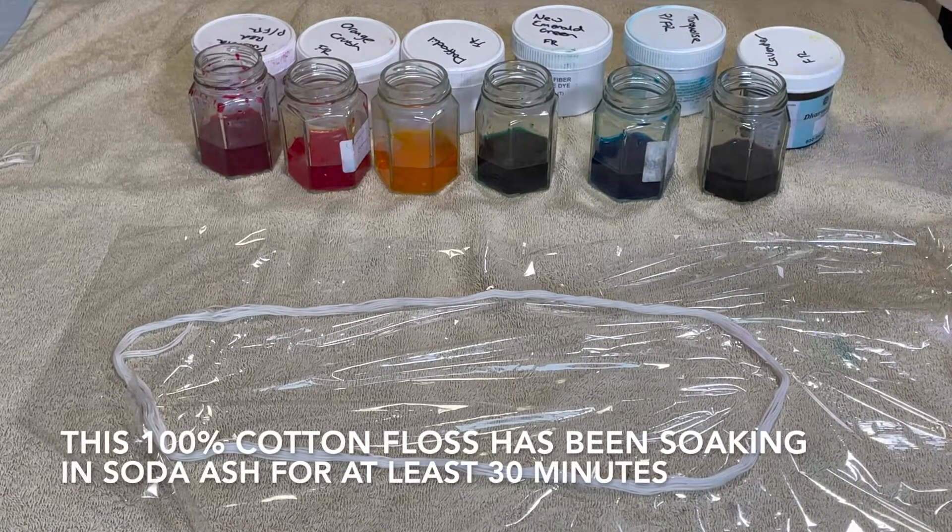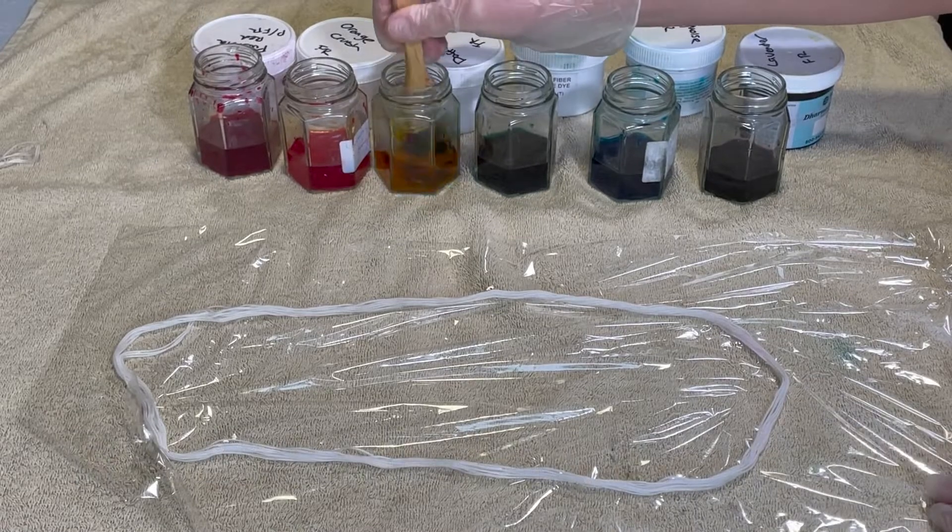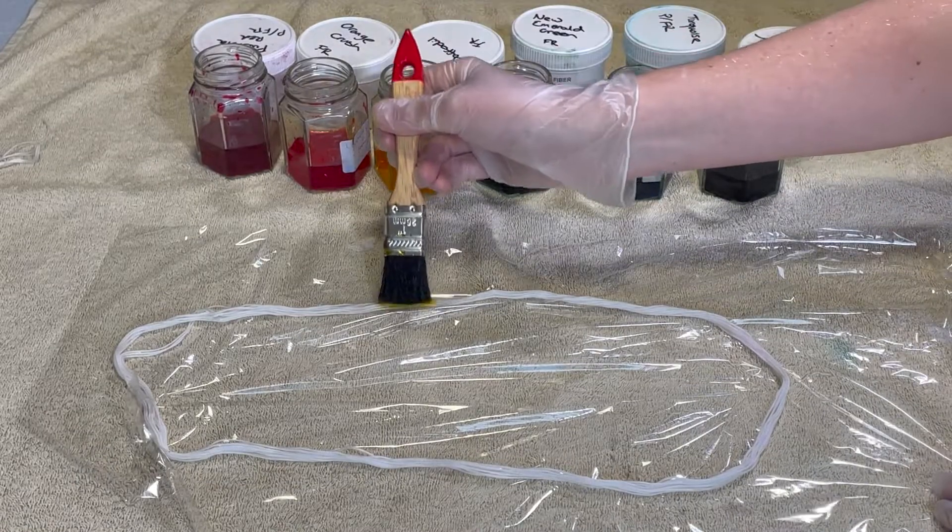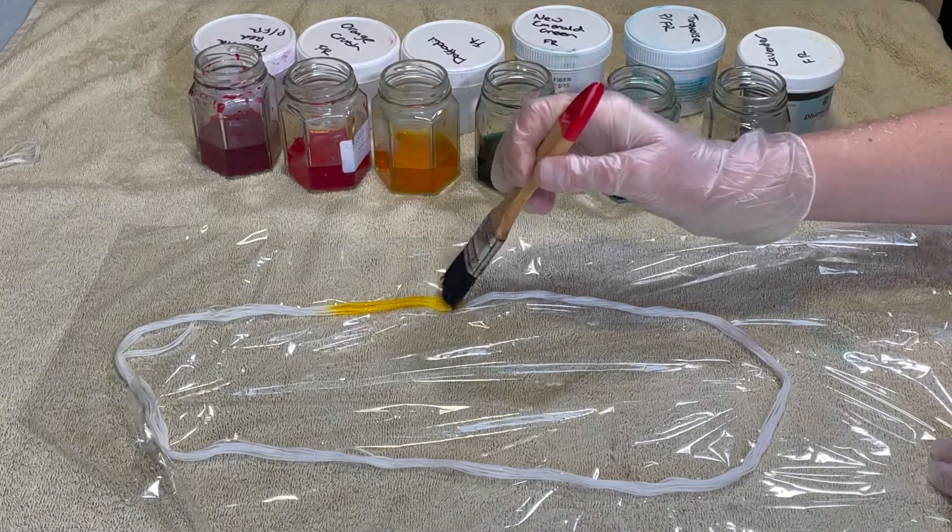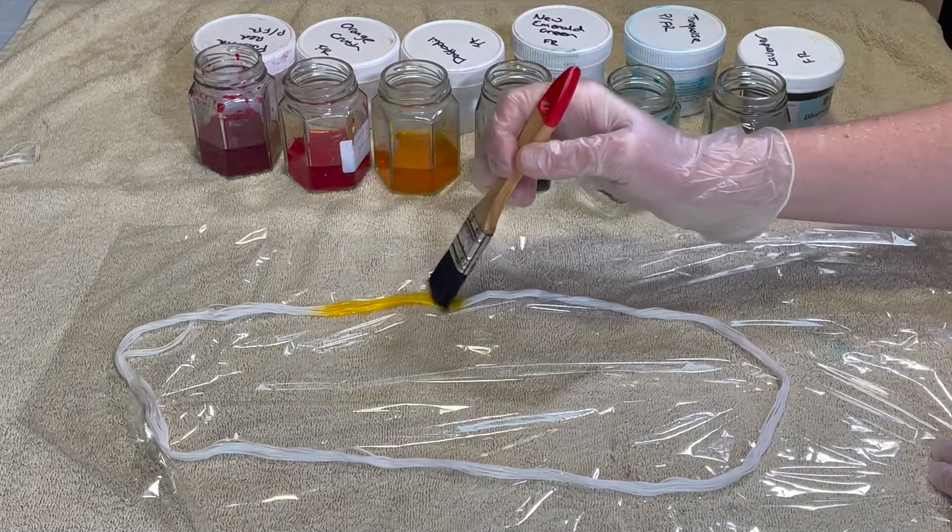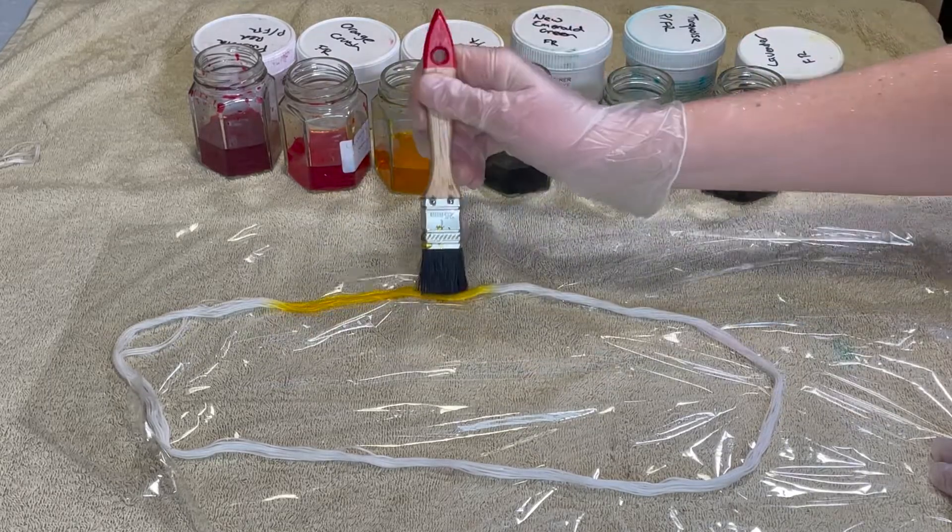First I'm going to start with the Daffodil. That's because yellow is generally the weakest color and I don't want it to be overpowered by the orange or the green.